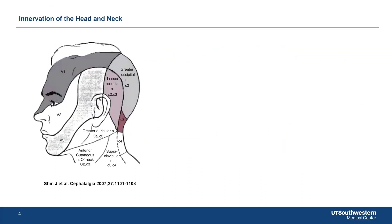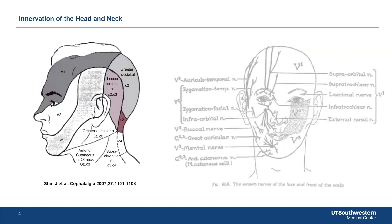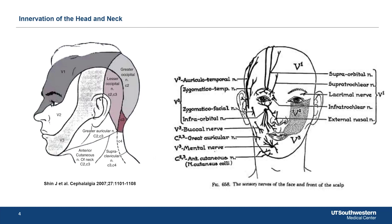A little bit of anatomy that we should be familiar with — trigeminal neuralgia. The word 'tri' or the prefix 'tri' is because there are three major portions that we think about: V1, V2, and V3. It's good to have an imprint in your mind of generally where V1, V2, and V3 are, and the major landmarks.